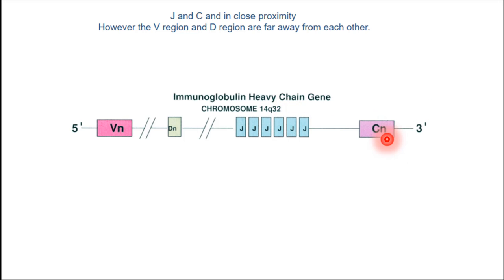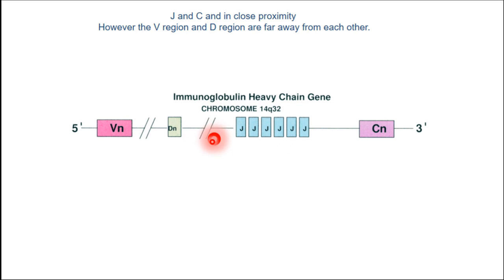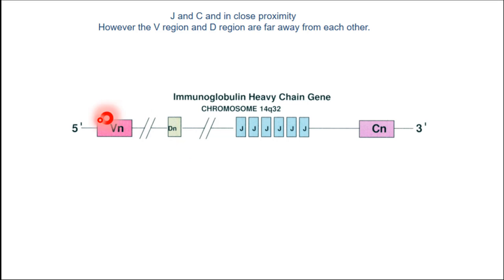Let's look at the DNA for the immunoglobulin heavy chain gene, which exists on chromosome 14, the long arm of chromosome 14. In this region, you have the constant region gene — responsible for the constant region — next to it are the J segments. Then, very far away, are the D and diversity segments — many, many of them — and even further away are the V segments. We are at the DNA level.